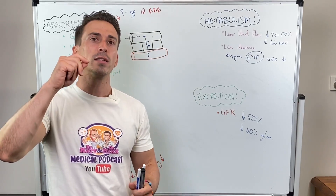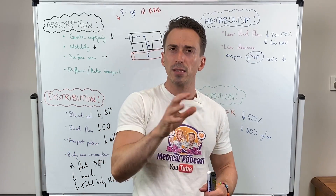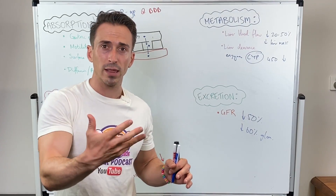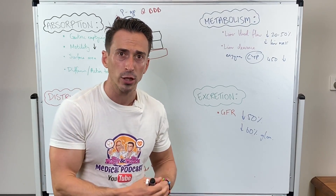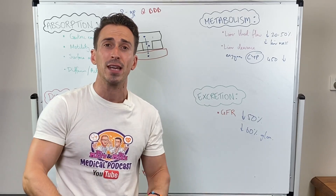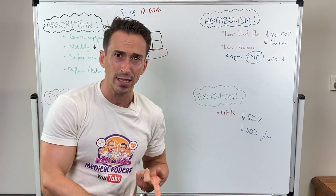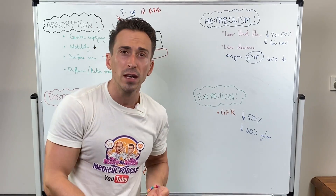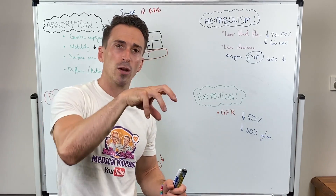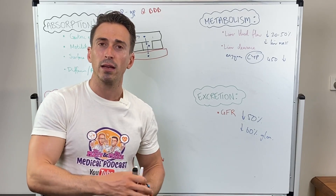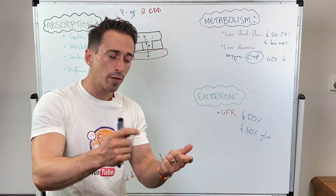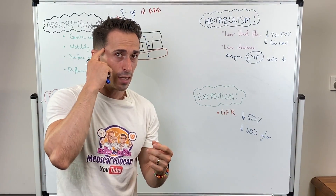The last topic is pharmacodynamics — the way the drug alters the body. This is important because the older person has a reduced physiological reserve and a reduced ability to cope with change. There is a reduction in tissue perfusion, blood volume, and organ mass — for example, brain mass reduces by 5% every decade after age 40. There are also reductions in neurotransmitters, receptor density, and receptor affinity. All these changes mean that an older person will take longer to rebound from any metabolic perturbations caused by a drug. Keep all of these pharmacokinetic and pharmacodynamic changes in mind.